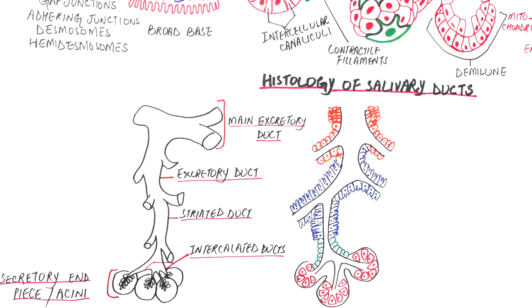The intercalated ducts emerge from each single acini and have the smallest diameter of all mentioned ducts. The intercalated ducts share the same lumen with the acini, however their lumen is somewhat larger than that of the acini. The ducts are lined by simple cuboidal epithelium with some myoepithelial cells associated with these cuboidal cells at some sites.